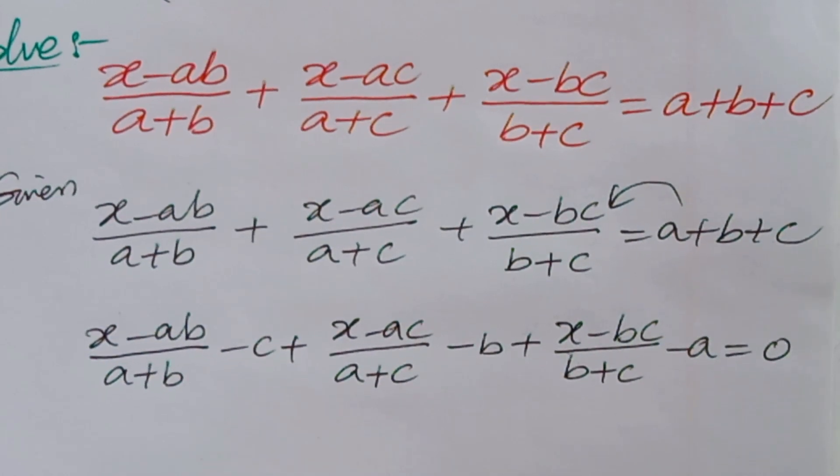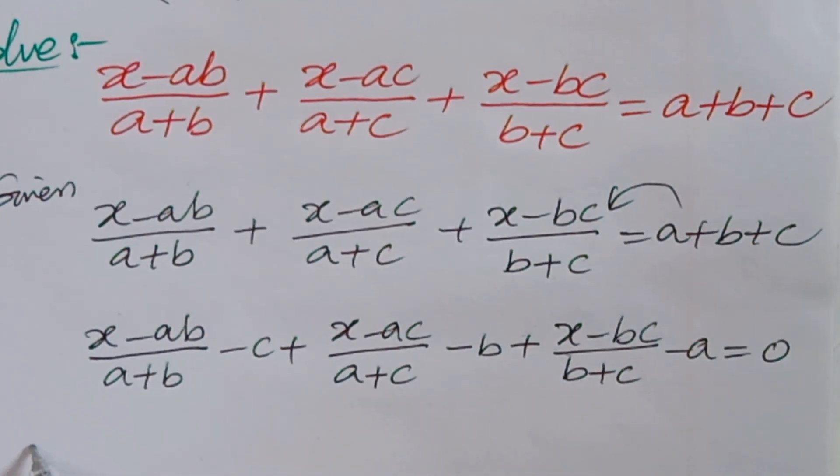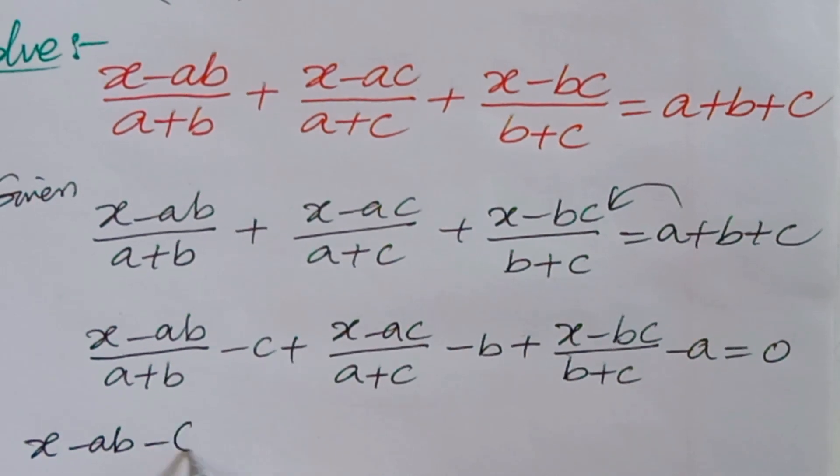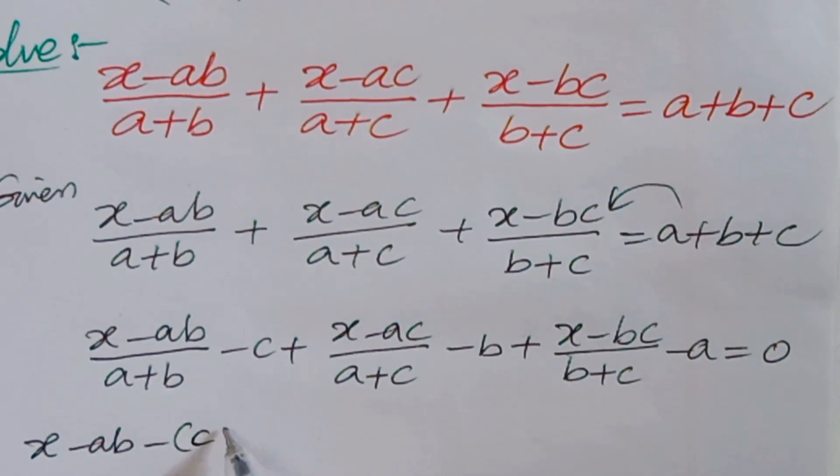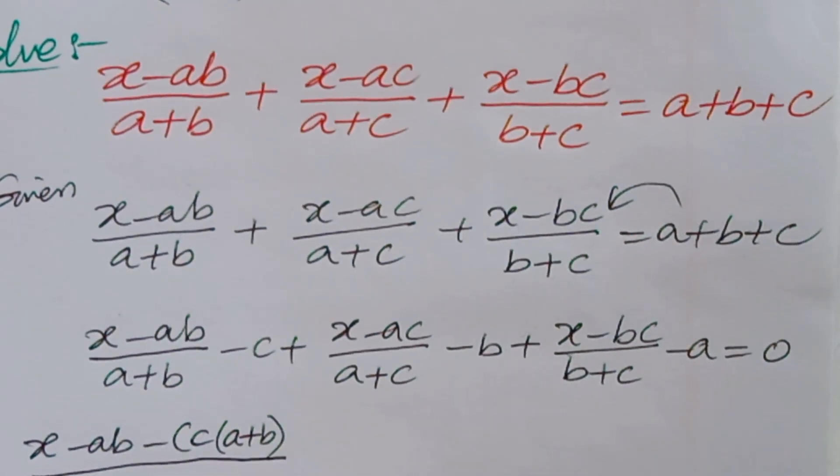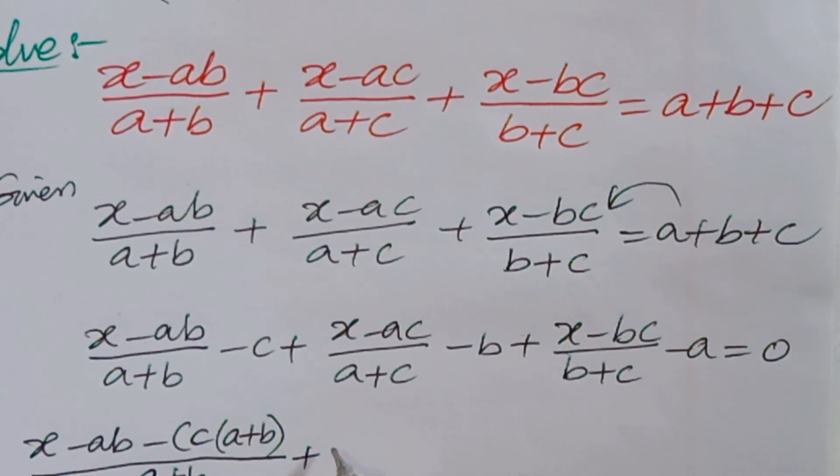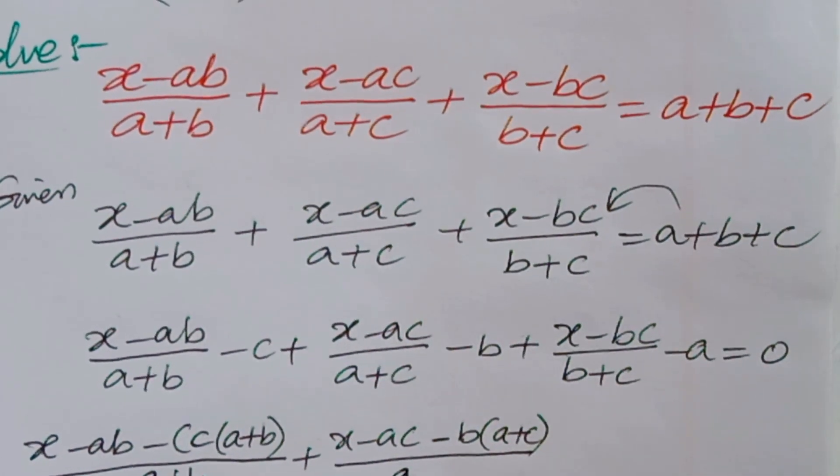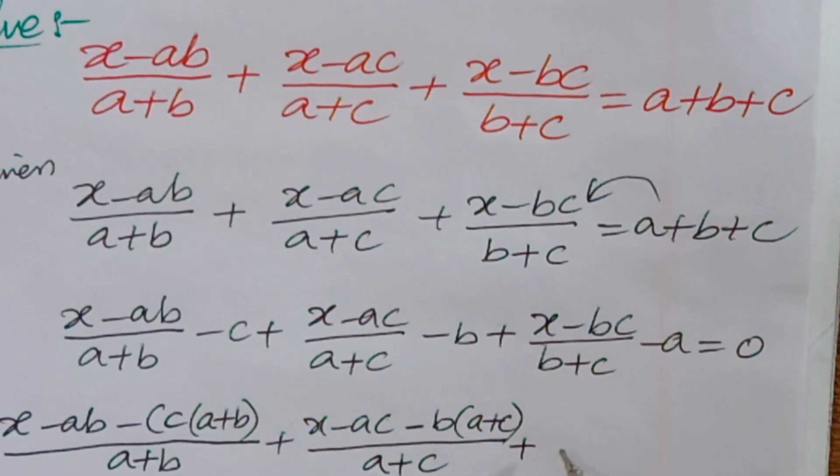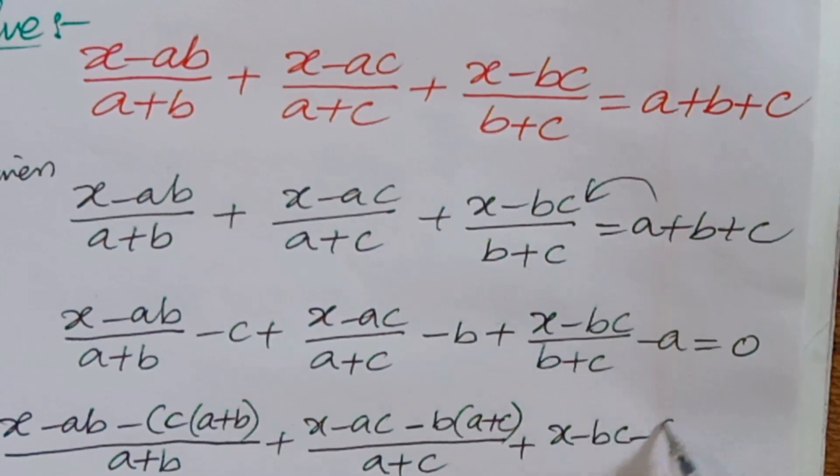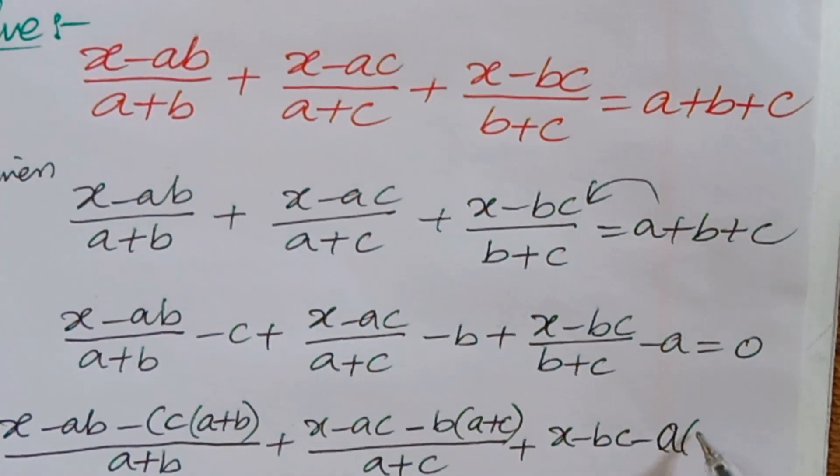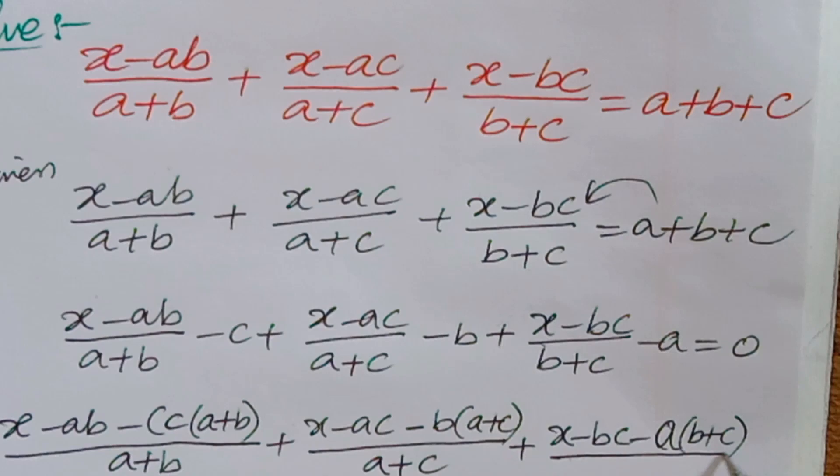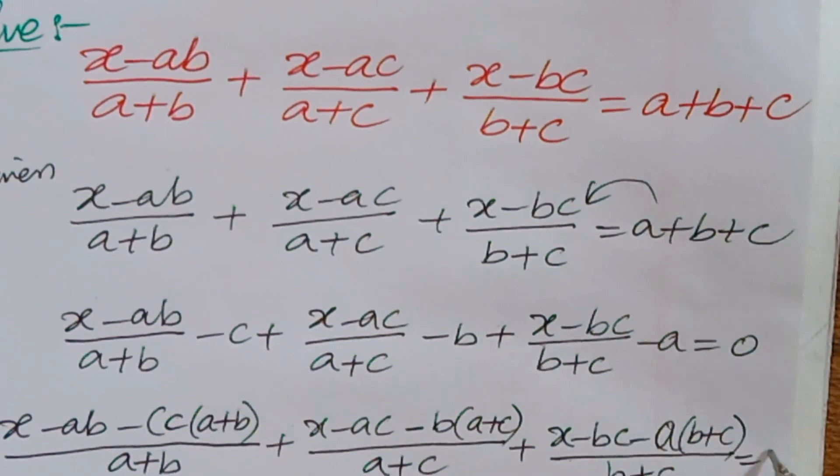Now if you take LCM: [x - ab - c(a + b)]/(a + b) plus [x - ac - b(a + c)]/(a + c) plus [x - bc - a(b + c)]/(b + c) is equal to 0.